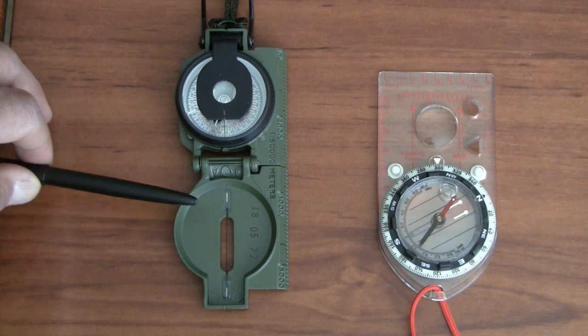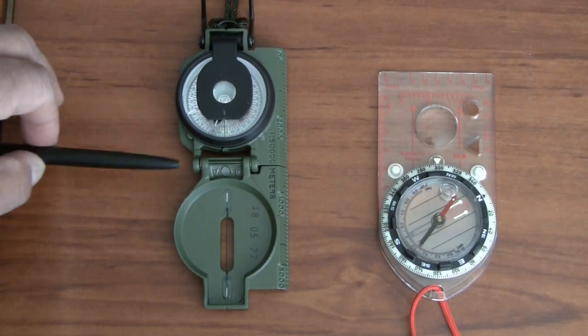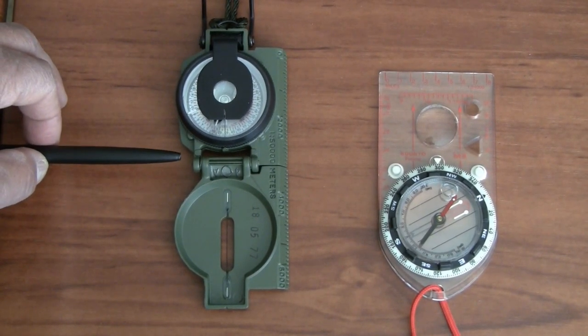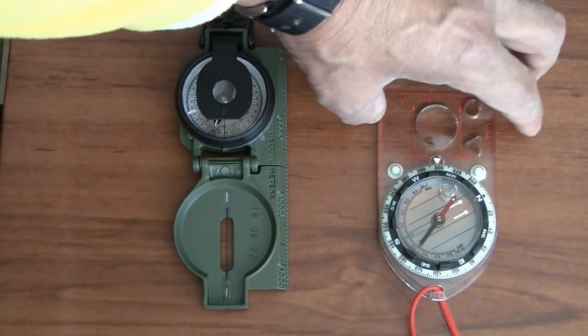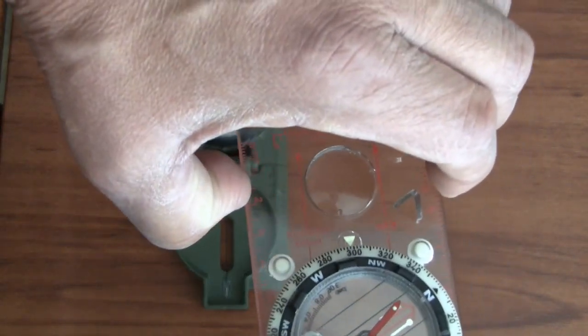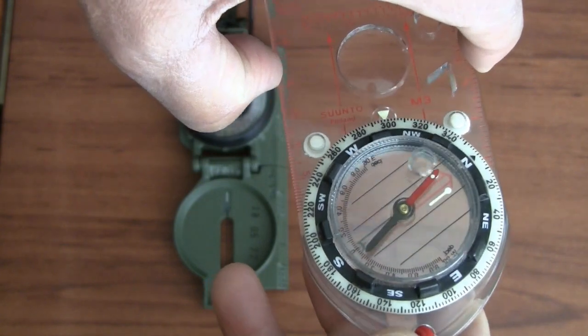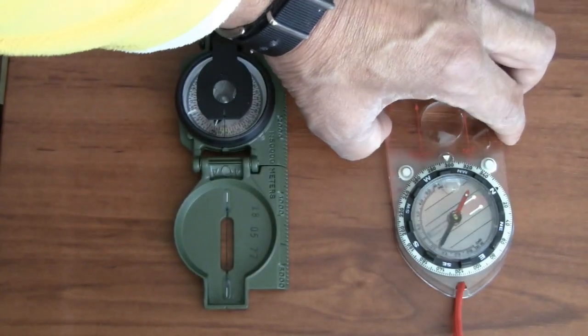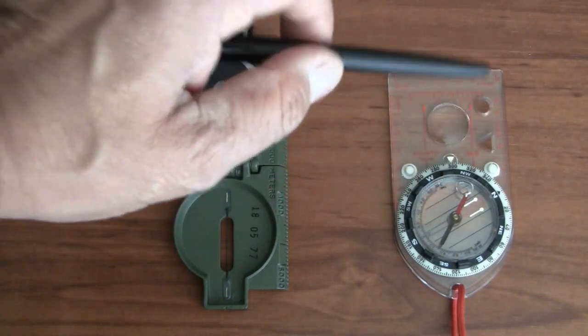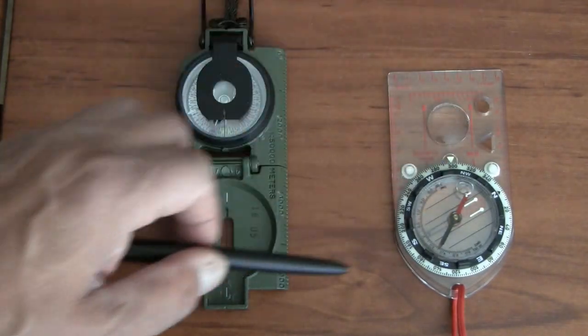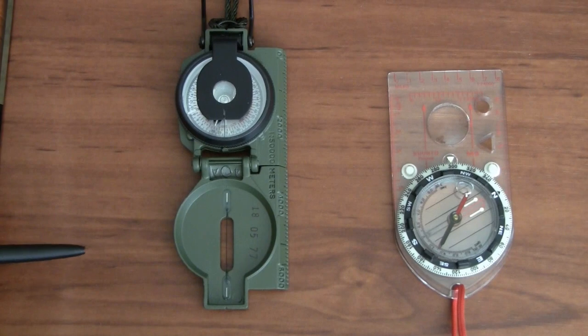Now, this particular one is made by Cammenga. That's the company that makes them for the US military, and it's exactly the same model that's available to civilians. If you take a look at this compass, the Suunto, what you will see in the compass face is a bubble. Now, these compasses are filled with liquid, and almost always they end up with a bubble. And the bubble affects, and this is over time, the bubble affects the accuracy and sometimes can significantly affect the movement of the needle.